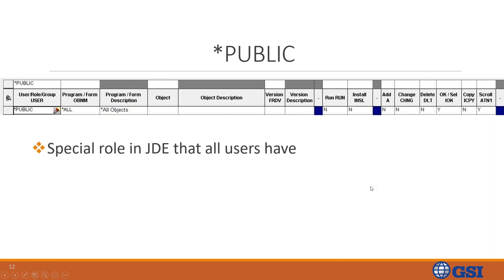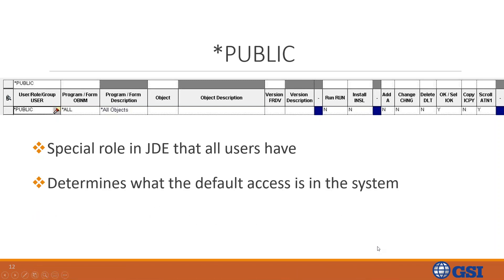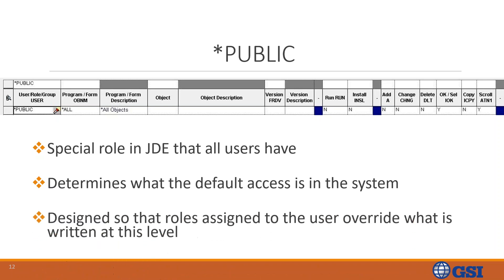This is a special role in JDE that all users have. It determines what the default access is in the system — whether it's an open system, where the values would be all yes, or a closed system. This is the default access, and it's designed so that the roles assigned to the user override what is written at this level.